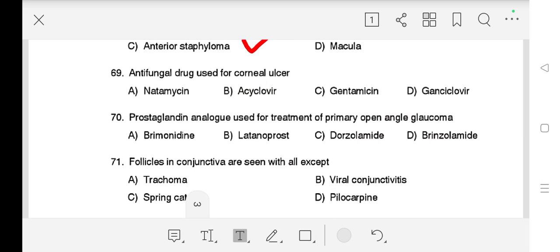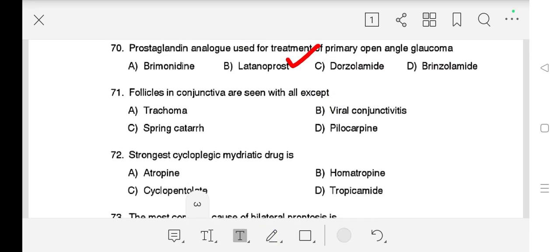Question number 69 is: Antifungal drug used for corneal ulcer is - correct answer is A) Natamycin. Question number 70 is: Prostaglandin analog used for treatment of primary open angle glaucoma - right answer is B) Latanoprost. Question number 71 is: Follicles in conjunctiva are seen with all except A) Trachoma, B) Viral conjunctivitis, C) Spring catarrh, D) Pilocarpine. Our correct answer is C) Spring catarrh.